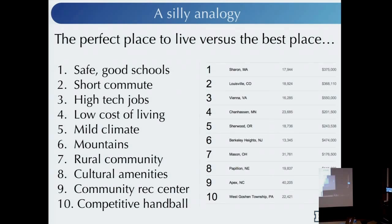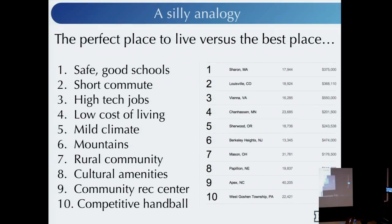The problem is: it doesn't exist. The perfect place to live just doesn't exist — you have to find the best place and make some compromise. I looked at the 10 most desirable places ranked by CNN Money, and for example the one in Virginia has a median home cost over half a million dollars, which rules out the low cost of living criterion. And that's the problem with inverse design for materials: you cook up the properties you want, the computer tells you the material, and then it turns out that material isn't thermodynamically stable — you could never make it.